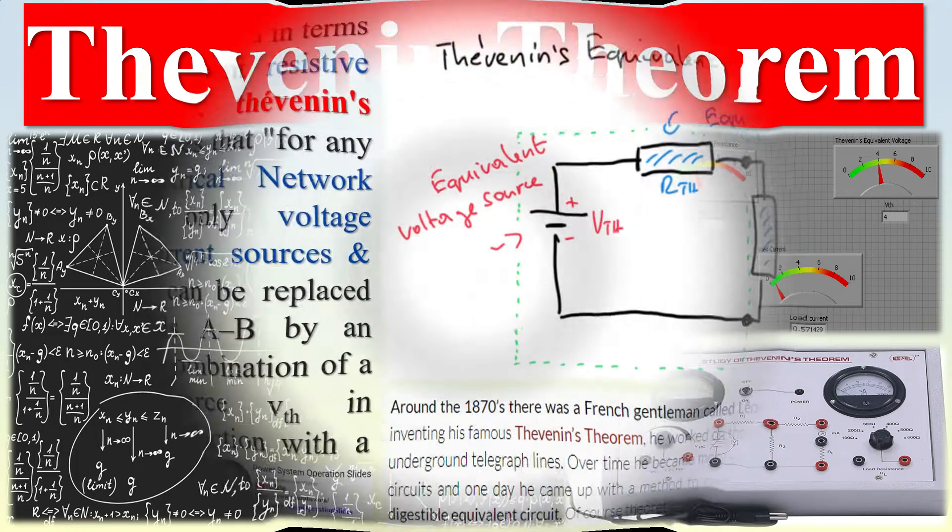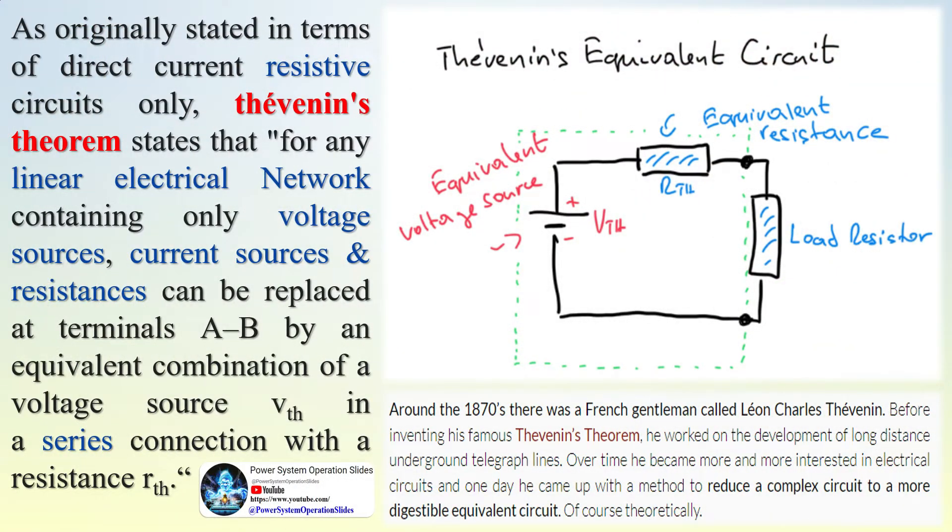Thevenin's theorem is a valuable circuit concept and analytical method used to convert a complex circuit into a simpler equivalent circuit. The theorem states any linear circuit containing several voltages and resistances can be replaced by just one single voltage in series with a single resistance connected across the load.